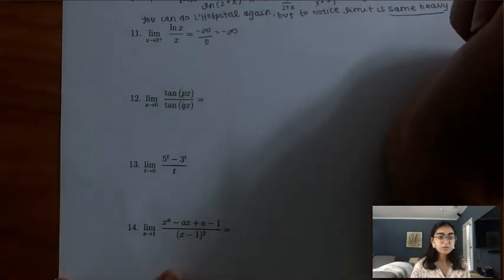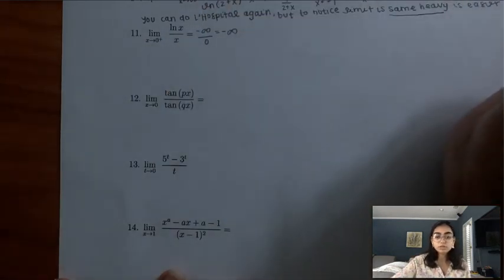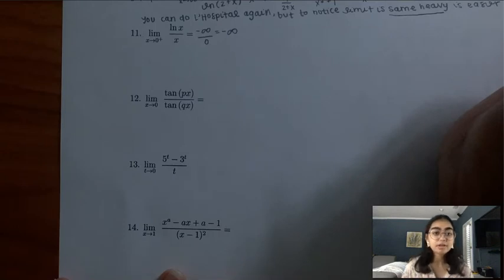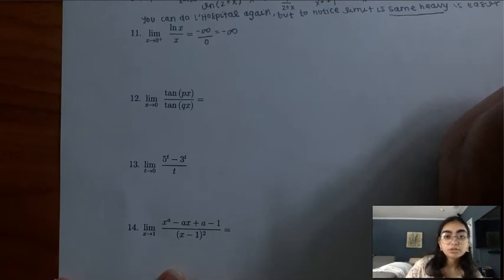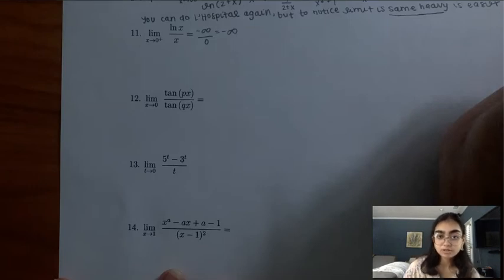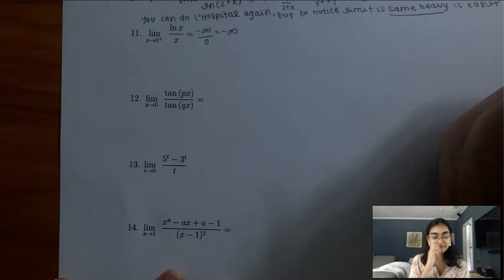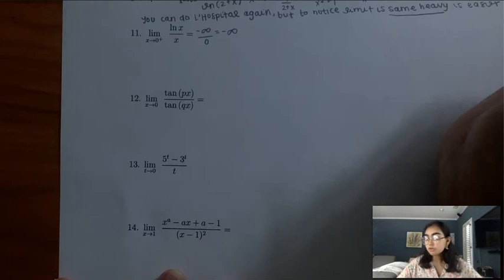The next problem: if we plug in 0 to the top and the bottom, we get negative infinity over 0. A number over 0 is negative infinity, so that's our answer. We don't have to do L'Hopital's rule and can just move on.